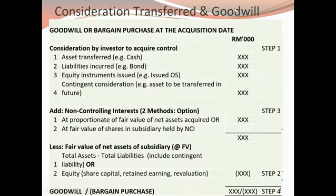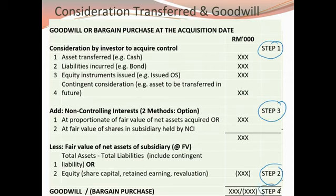For the calculation and the steps in determining goodwill and bargain purchase, we compare the consideration transferred — the amount paid by the parent — with the fair value of net assets. You can see in the table the four steps: step one, step two, step three, and step four, which leads to the determination of either a goodwill or bargain purchase from the business combination.